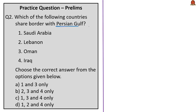The options appear a bit tricky. If you don't remember the map, you would easily think that Lebanon is also a country open to the Persian Gulf. But that is wrong because Lebanon shares a border with the Mediterranean Sea, not with the Persian Gulf.